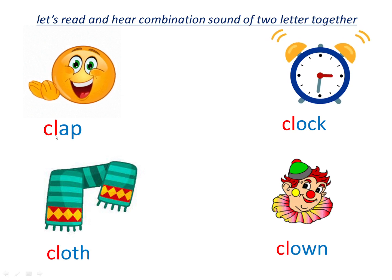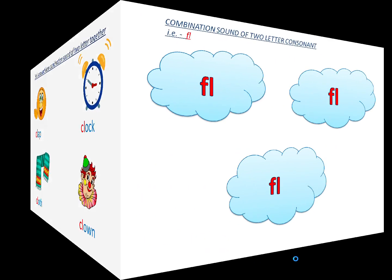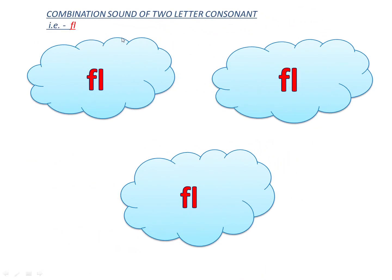Here you can see the two consonant letters when put together: Cluh, Cluh, Cluh. Now let's see the combination sound of next two letter consonants, that is F and L.